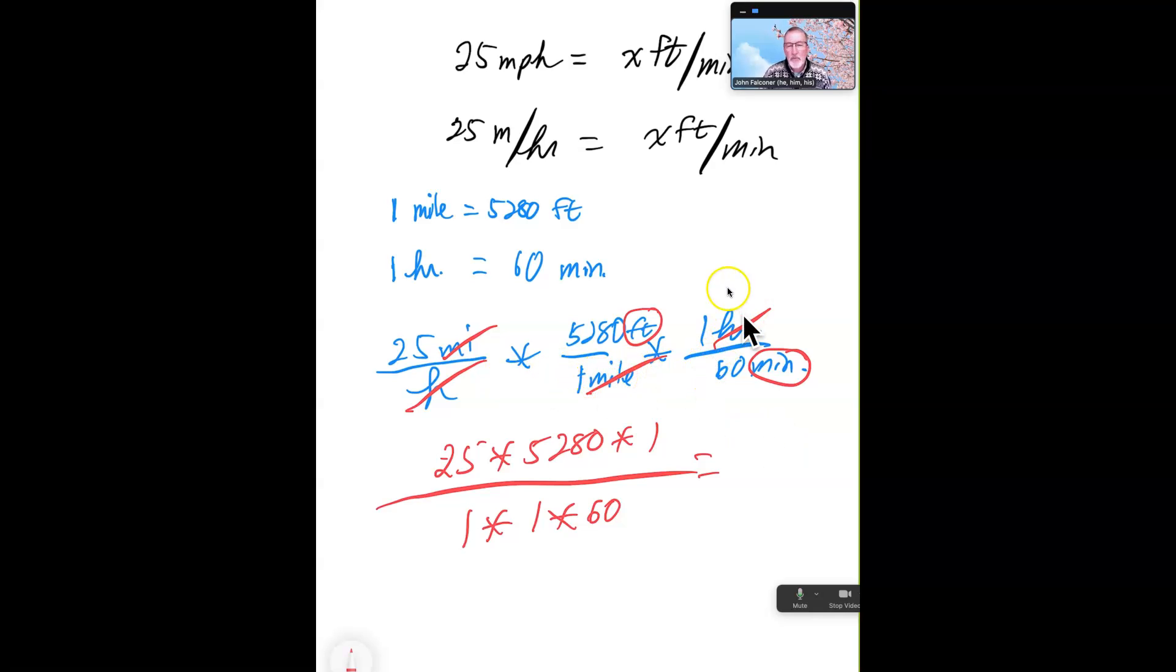And then for our next conversion, we've got one hour is equal to 60 minutes. And we've got miles per hour here. Hours is on the bottom. So we're going to want to have this one stacked so that hours is the unit on top. So then we can write it out this way. 25 miles per hour times 5,280 feet per mile times one hour per 60 minutes.